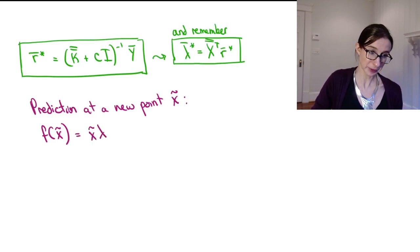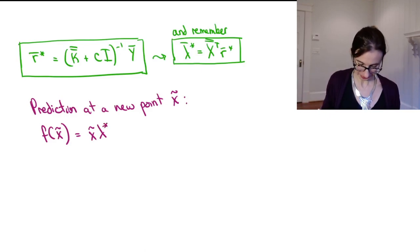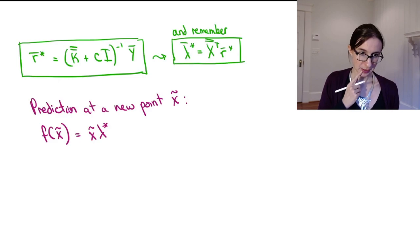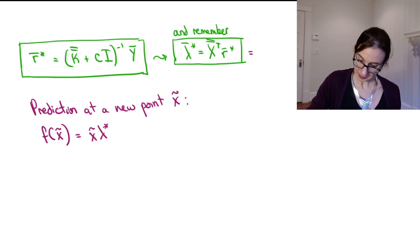And of course, we know the formula for that is x tilde times lambda star if we were in the original space. We have to map to the kernel space. Okay. So what do we know about lambda star? Okay. We know that we can write, actually this guy,